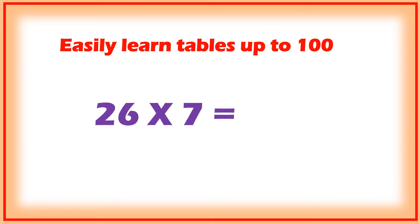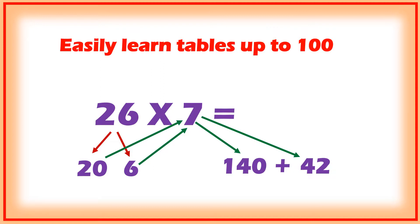Let me try one example: 26 into 7. Divide the 26 into 2 parts - that is 20 and 6. Now multiply: 2 into 7 is equal to 14. Zero is there after 2, so add zero then it will become 140. Plus 6 into 7 is 42. 140 plus 42 is equal to 182.